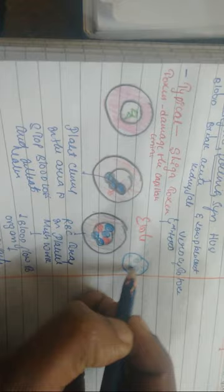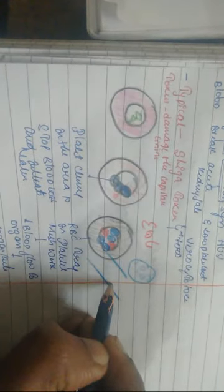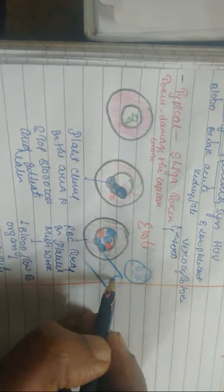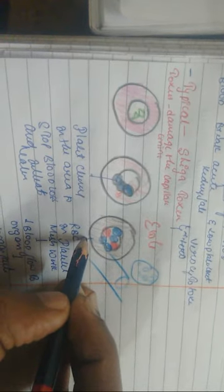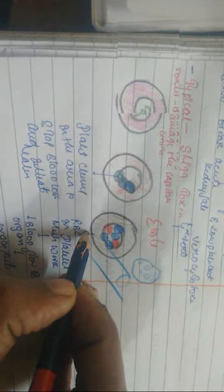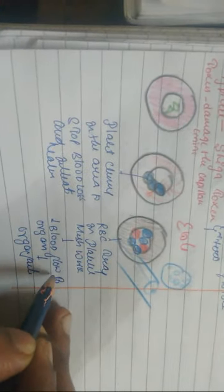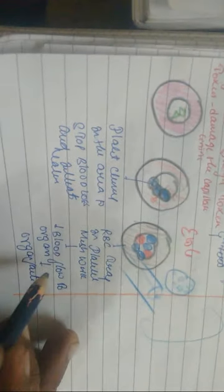In typical HUS, the Shiga toxin causes endothelial damage in blood vessels. Platelets aggregate at the damaged site, forming a platelet meshwork that blocks the vessel lumen. RBCs become trapped in this platelet meshwork, causing intravascular hemolysis as they fragment. The reduced blood flow to organs, especially the kidney, leads to organ failure — the 'uremic' component of HUS.